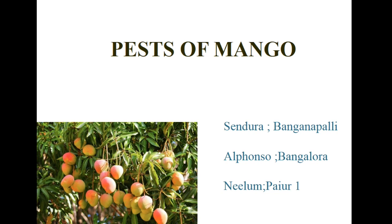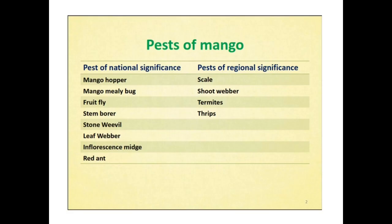Hello everyone. In this lecture, let us look at various IPM practices followed against mango pests. This plant is normally referred to as the king of fruits. The important varieties of mango include Sindhura, Banganapalli, Alphonso, Bangalura, Neelam, and Paiur 1. The pests are broadly classified into two categories: pests of national significance and pests of regional significance.